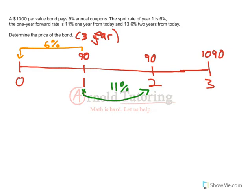It also says the 1 year forward rate is 13.6% 2 years from today. So 2 years from today, we're going to go to time 2, and then it's the 1 year forward rate from that time, so anything between time 2 and time 3 will be discounted at 13.6%.